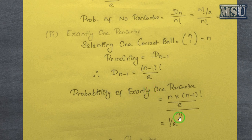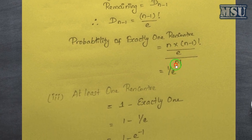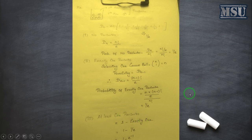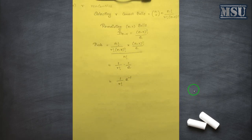The probability of exactly 1 rencontre is: nC1 × D(n−1) divided by n!. Selecting 1 correct ball gives n, derangement of n−1 gives (n−1)!/e, and total possibilities are n!. Simplifying, this is also 1/e. For at least 1 rencontre, the probability is 1 − (1/e) = 1 − e^(−1).